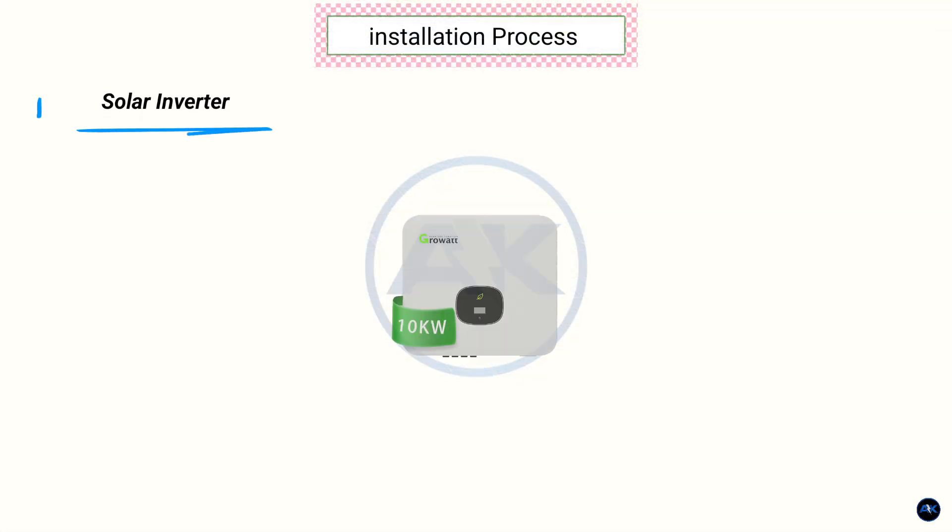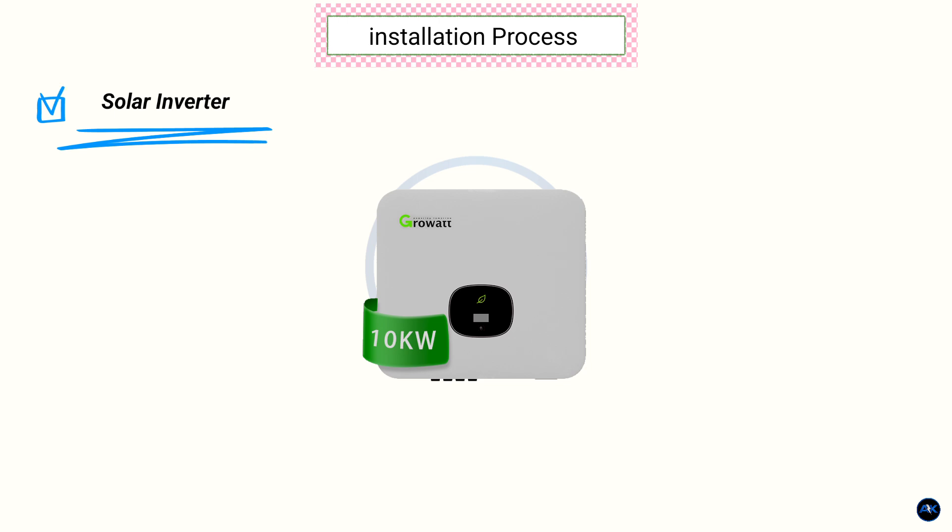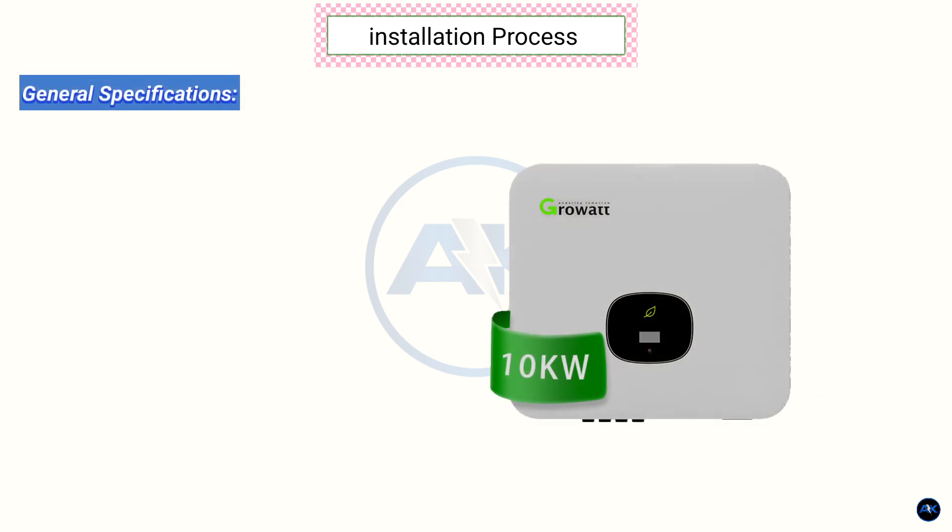Solar inverter. The Growat 10kW on-grid inverter is a popular choice for residential and commercial solar installations due to its high efficiency, reliability, and competitive price. Here are some of the key specifications. General specifications: Model Growat MOD 1000 KTL3X, inverter type on-grid transformer-less, phase three phase.